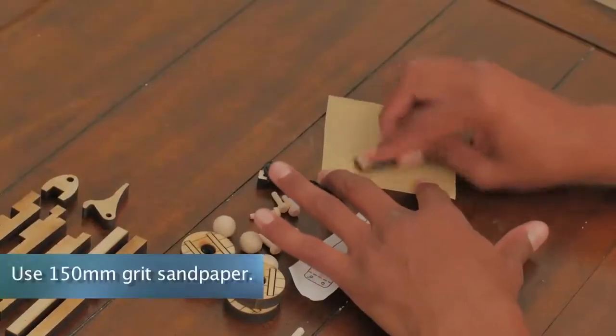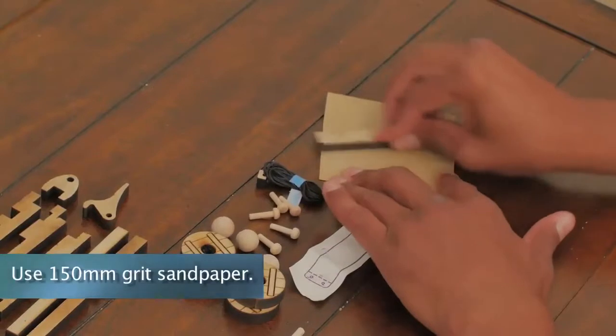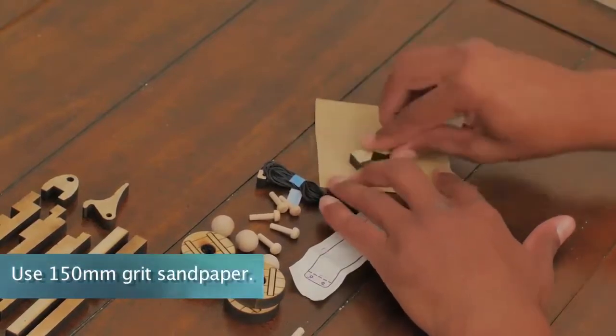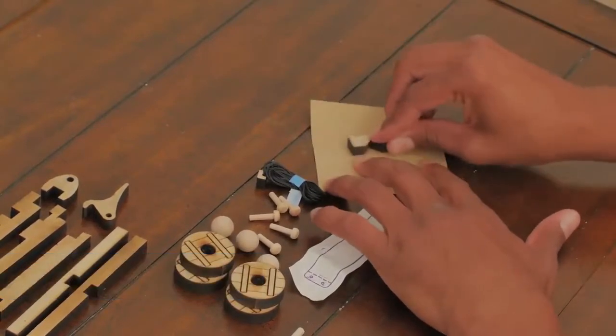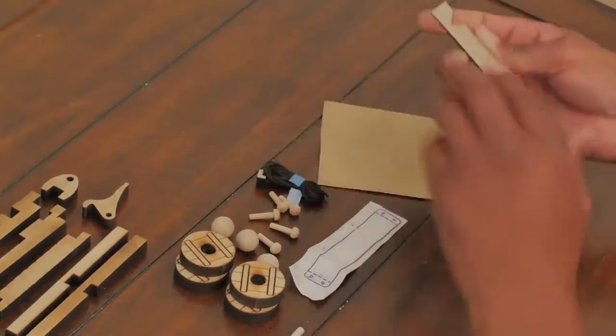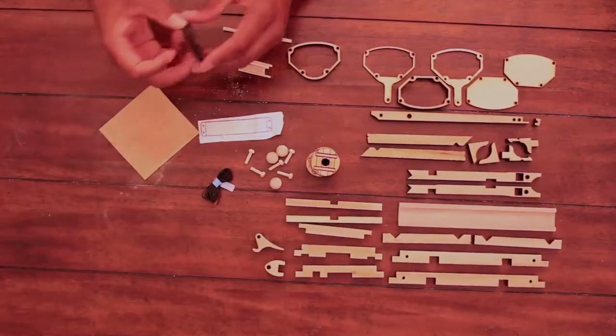To sand the parts, lay a sheet of 150 grit sandpaper flat on a hard surface, grit side up, and gently press the parts against the paper, moving it in small circles.